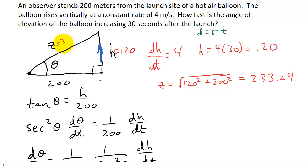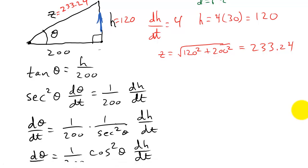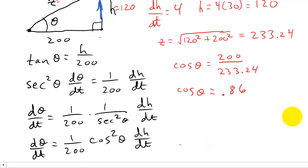So this is 233.24. All right, so let's see what we've got. So that means I can put cosine theta is equal to adjacent over hypotenuse, which is 200 over 233.24. And so cosine theta, if I plug that into my calculator, that comes out to about 0.86. I'm going to go ahead and round it.